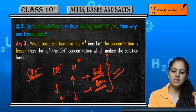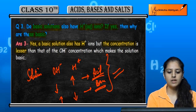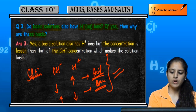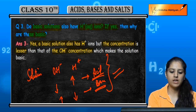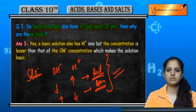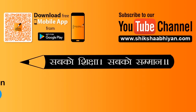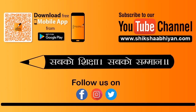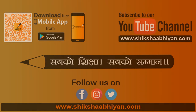If we talk about some base, it does have H+ ions, but the concentration of H+ is very low. The concentration of H+ in a base is lower compared to OH-, and that lower concentration of H+ is what characterizes it as a basic solution.